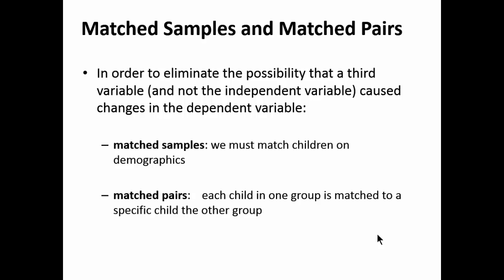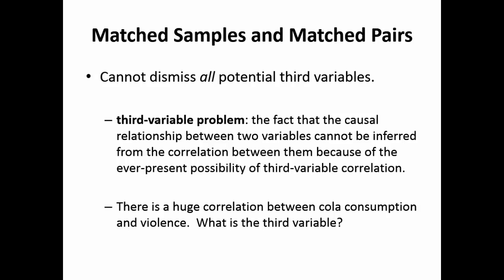A few years ago I did a study with death row participants. Those individuals are so unique that I felt it was important to use matched pairs — matching on everything except for living on death row. In general, we use matched samples; it's not as stringent, but it's not as time consuming. No matter what happens, you can never dismiss all potential third variables — you never know everything that happens to your participants.